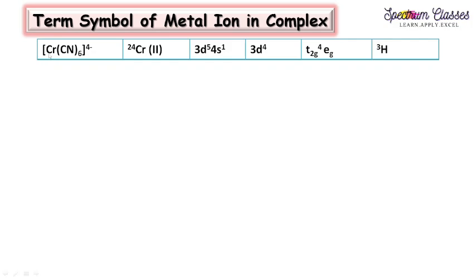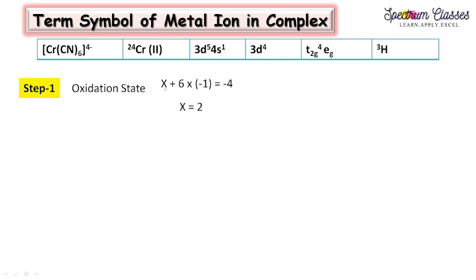The next example is Cr(CN)₆⁴⁻. CN has a minus one contribution, so we calculate the oxidation state: X + 6×(−1) = −4, giving X = +2. So chromium is in the second oxidation state in this complex.